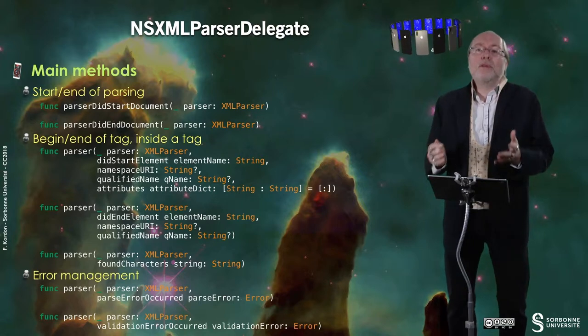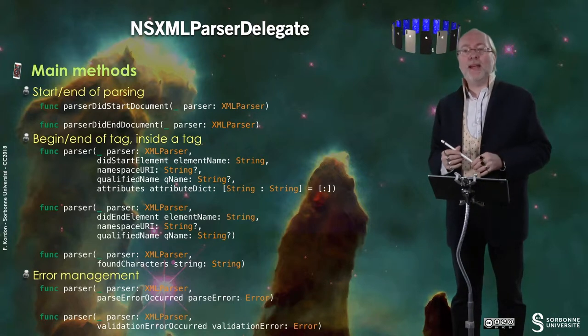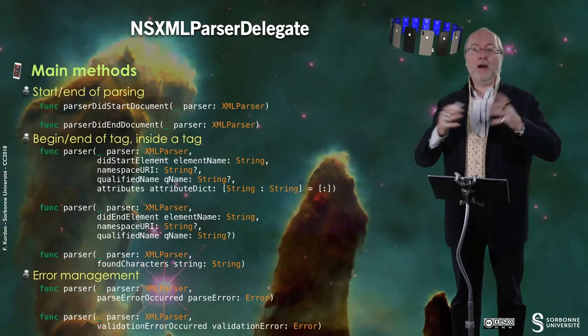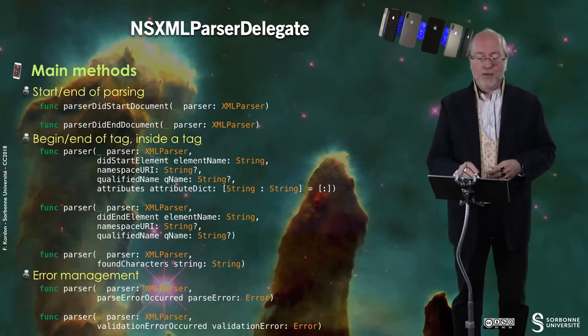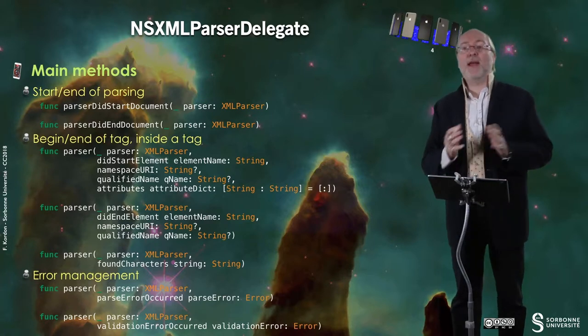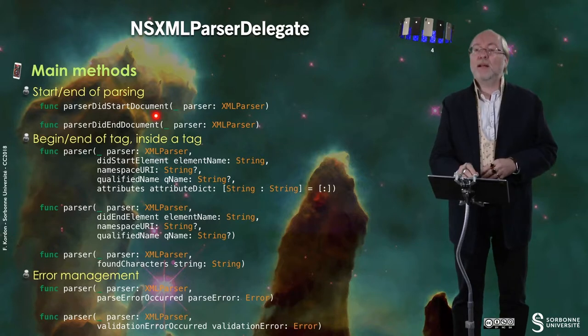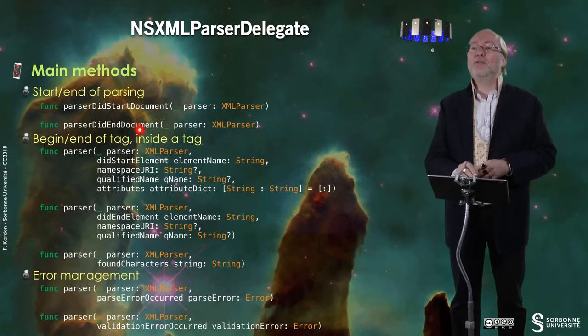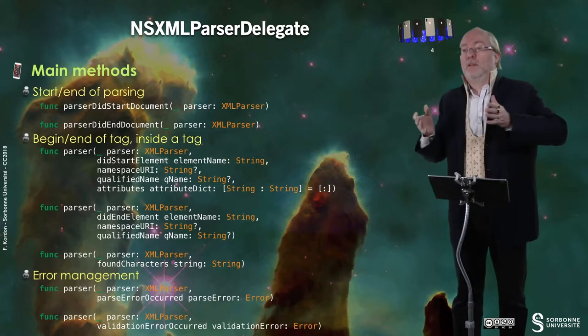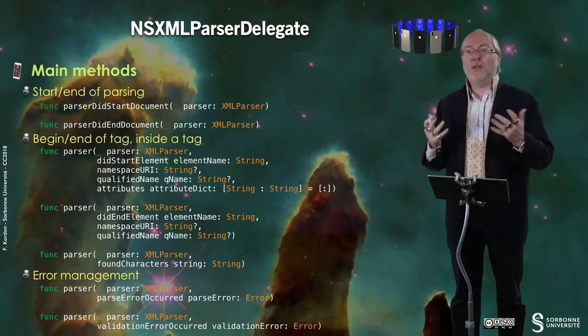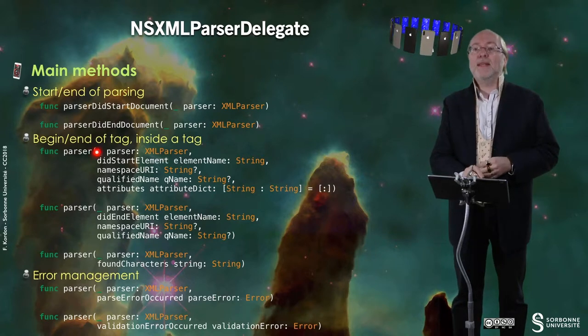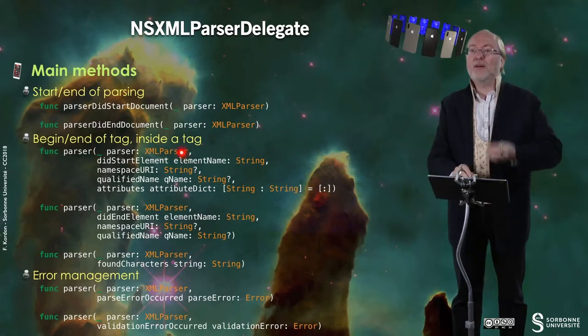Of course, we must go through NSXMLParser delegate. There are lots of methods; here are the most important ones — the ones that deal with the starting and the ending of the parsing. So, parserDidStartDocument or parserDidEndDocument are invoked when the document is about to be parsed or when the document is finished being parsed. It means that you can prepare or finalize the current state of your analyzer. Then, you have the begin and end of an XML tag.